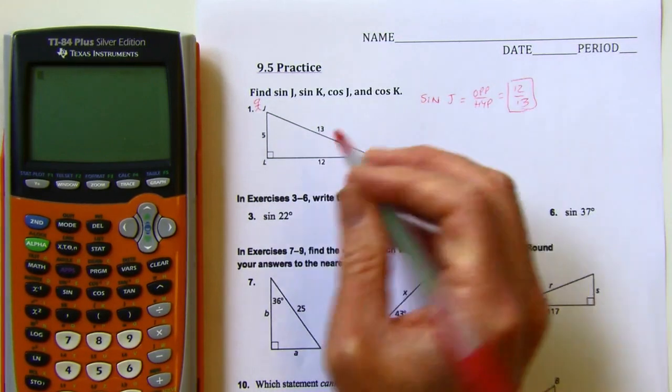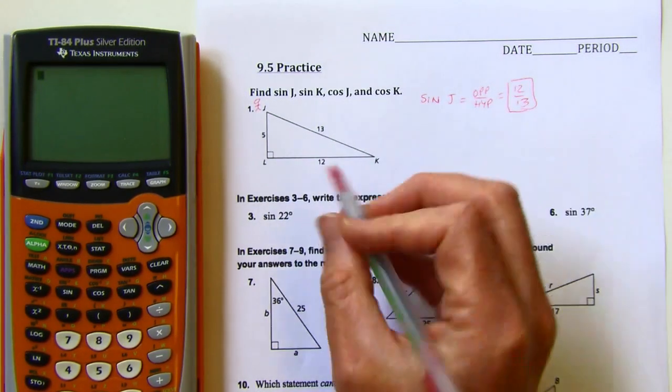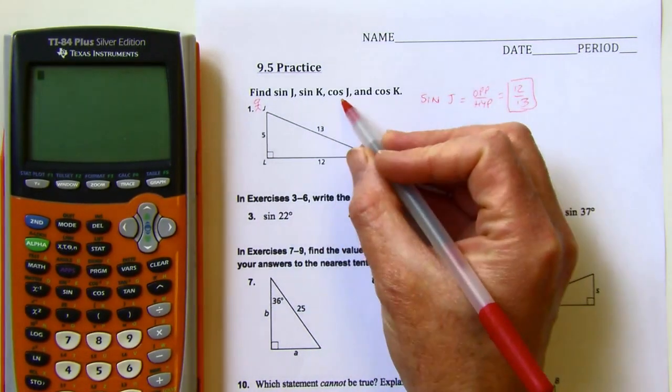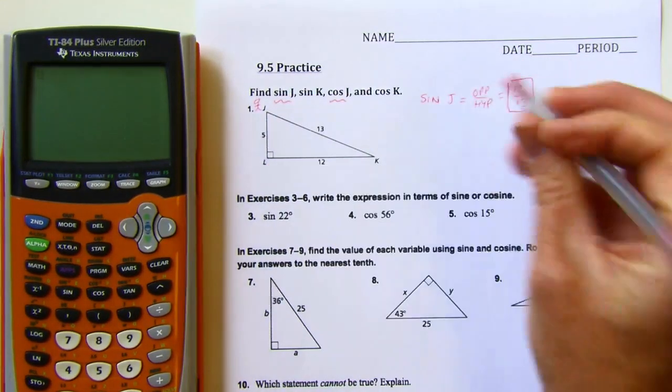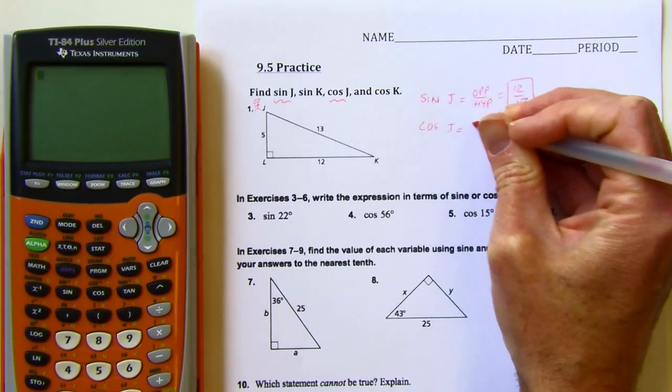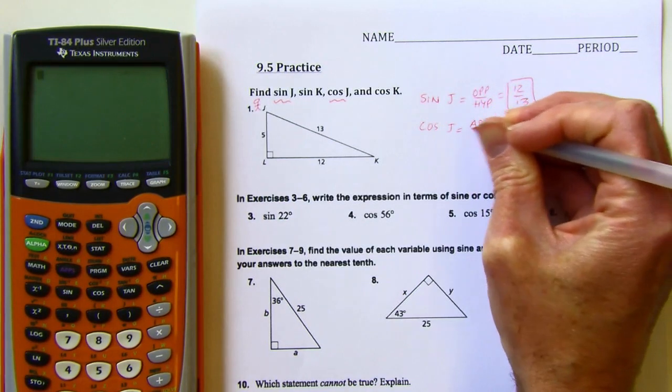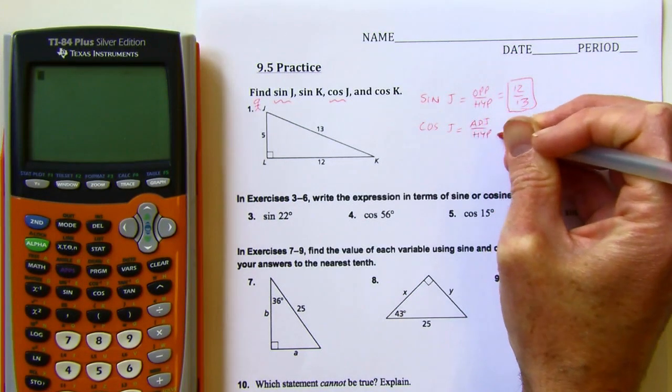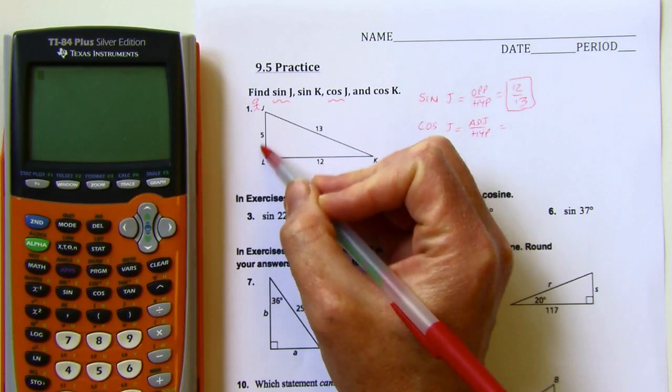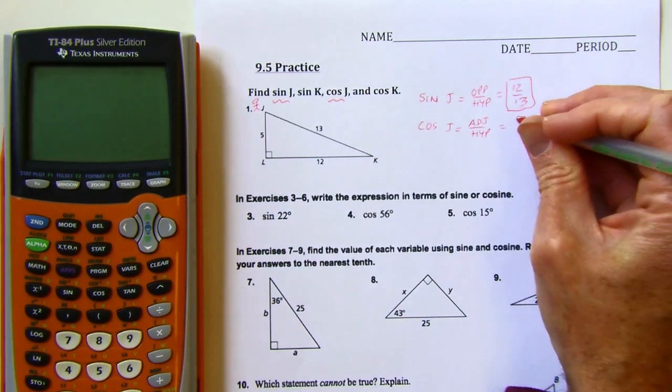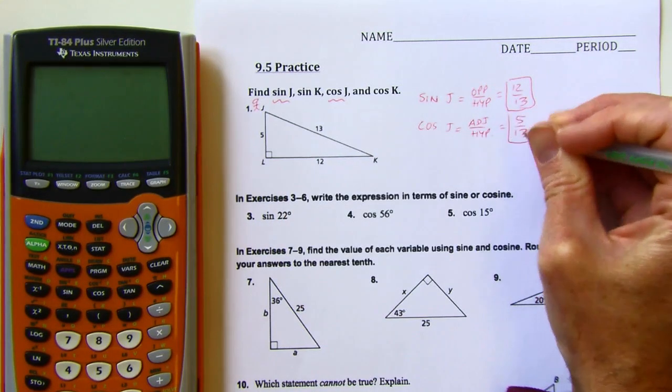So the sine of, well actually, let's do the cosine of j. So I'll do these two in red, and then because I'm already over there, why not? So the cosine of j, I'm going to do adjacent over hypotenuse. So the adjacent there, 5 would be the leg that's next to me, so 5 over 13, and then that's reduced.